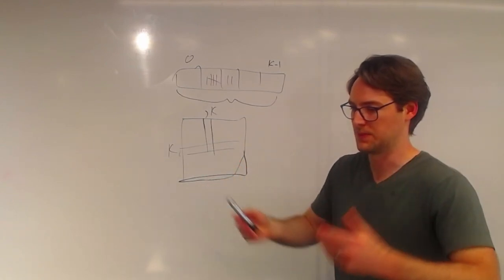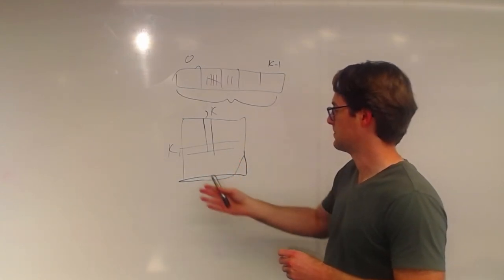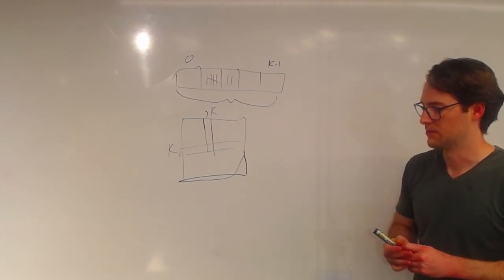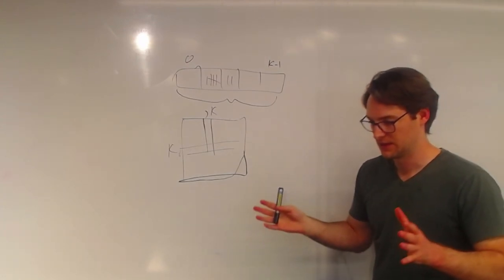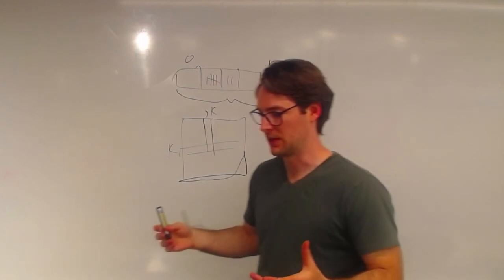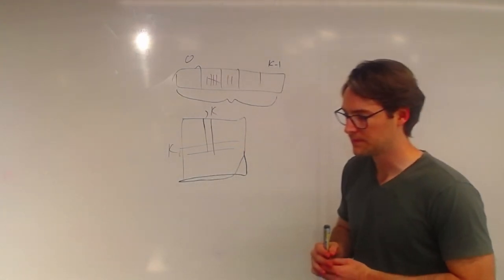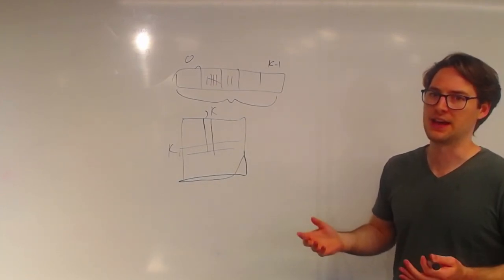But then of course we need to be able to represent this extra row and column we added that was meant to mean, you know, I ended my playthrough there and I didn't take anything more. I didn't do any more battles. We can do this by just having another vector.